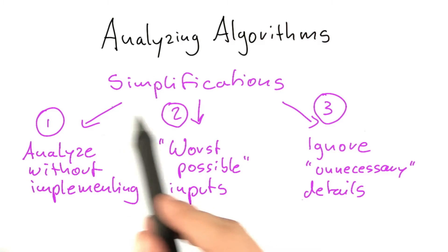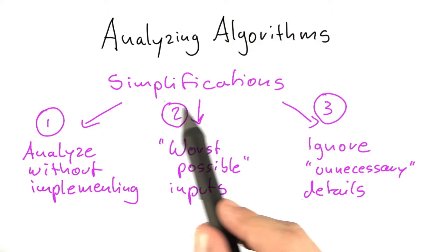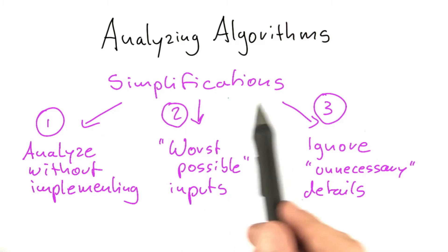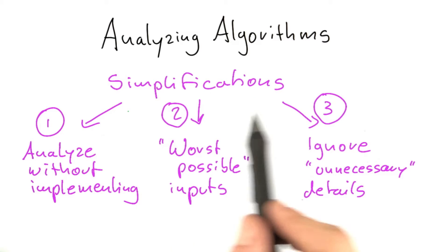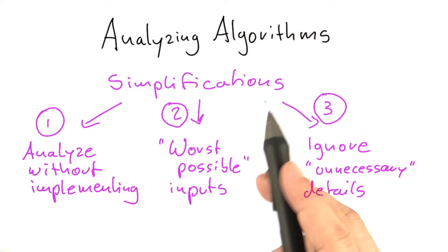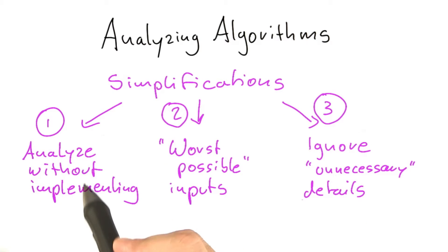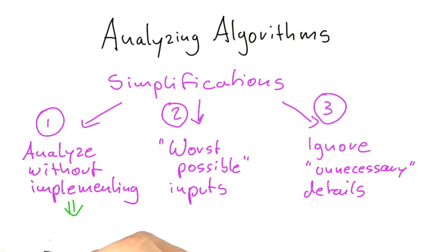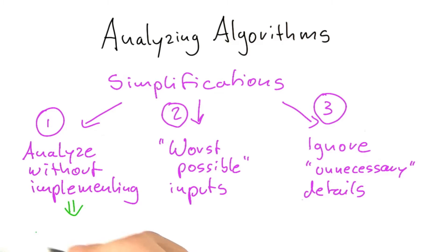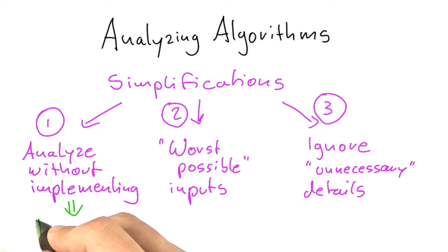So what do these simplifications actually look like? To analyze an algorithm without implementing it, we're going to consider a special kind of computer — not a real computer, but a model that comes pretty close — and that model is called the RAM.